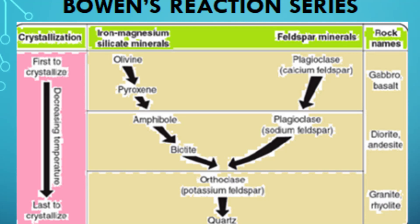The basic idea behind Bowen's Reaction Series is that as magma cools, minerals crystallize out of the melt in a predictable sequence, depending on their melting points and other chemical properties. Bowen divided minerals into two groups: the discontinuous series and the continuous series.